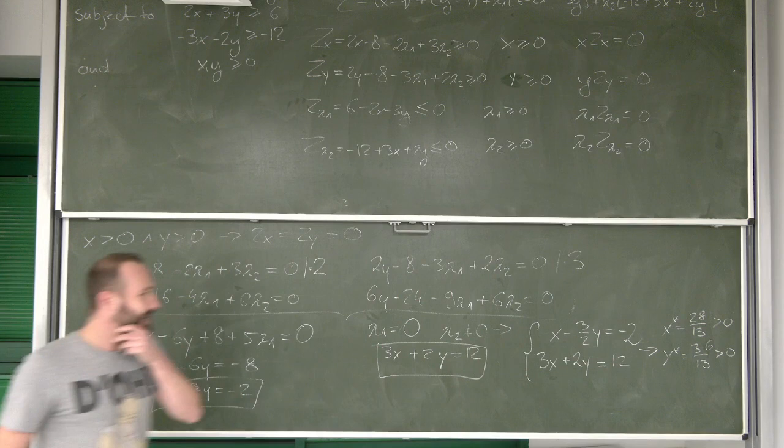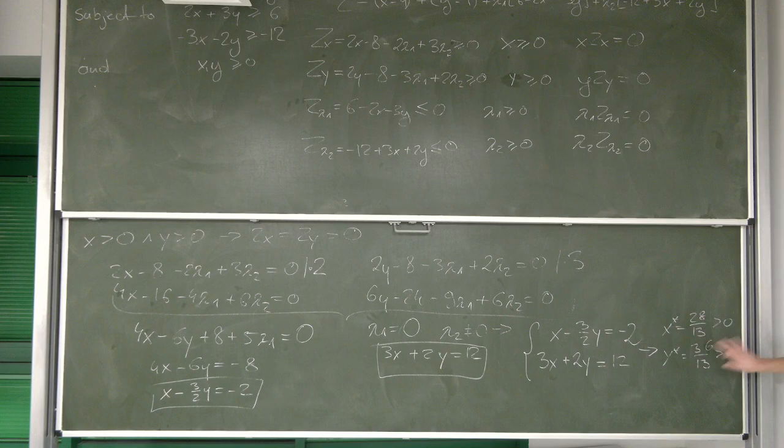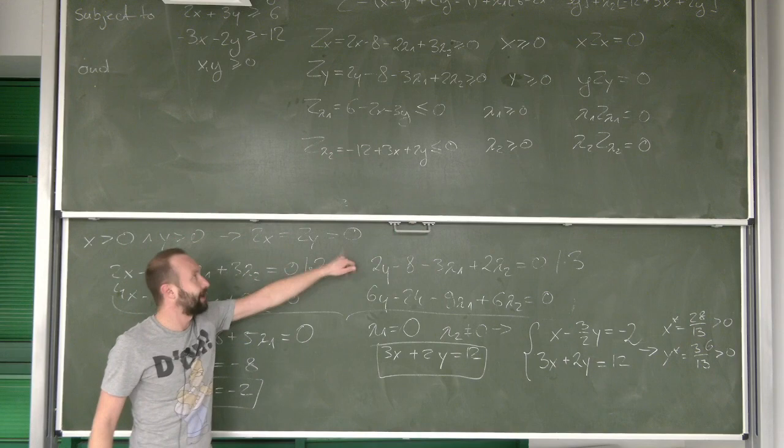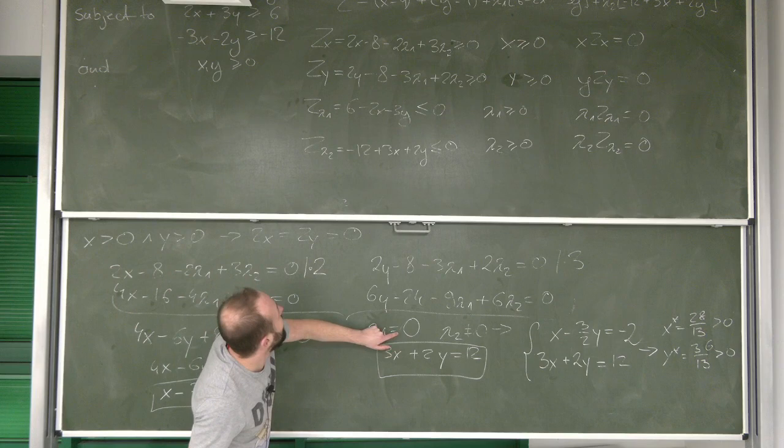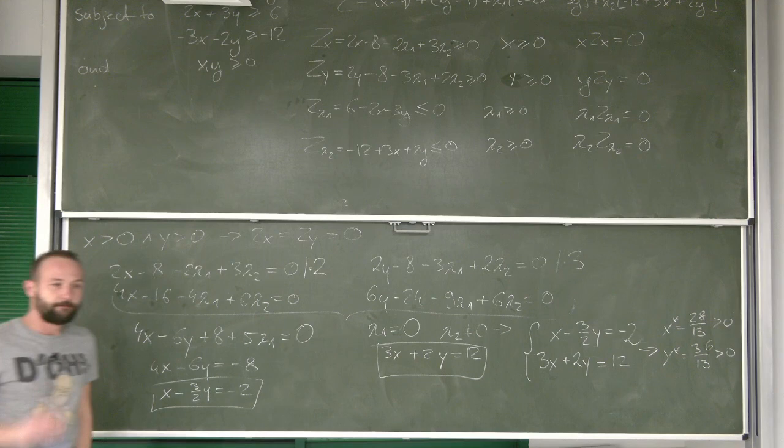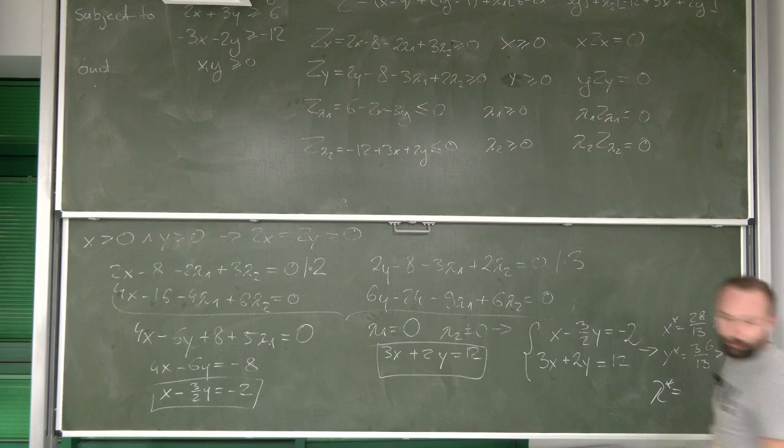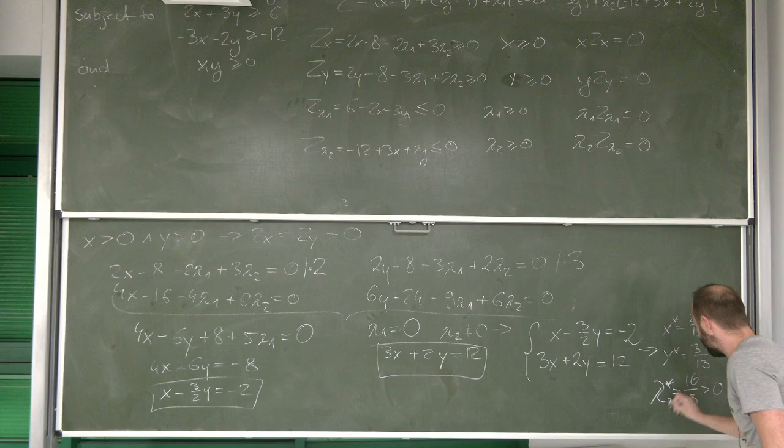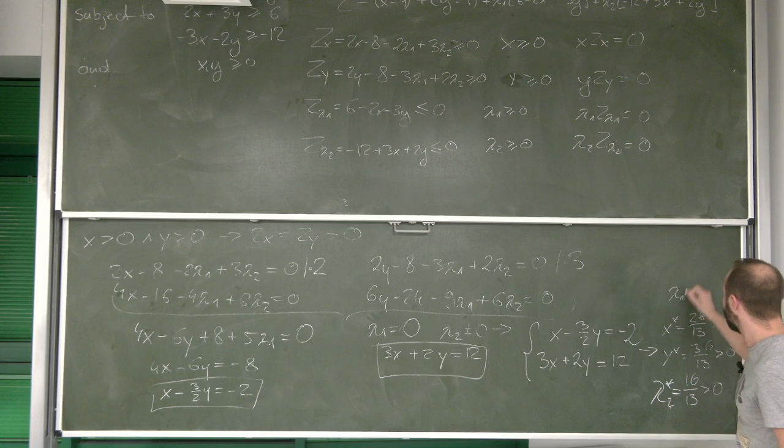And look, if we know that, we can go one step further. What I can do now is that I can take x and y and I can substitute them in the equation, for example, for zx or zy, which we know are equal to 0. And also, I can substitute there lambda 1, which is equal to 0. If I do this, I'm going to get that lambda 2 is equal to 16 over 13, which is positive. And finally, we get the full solution.